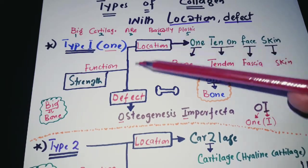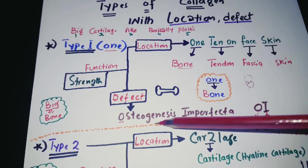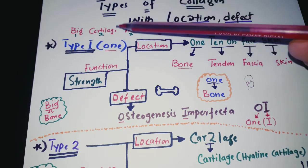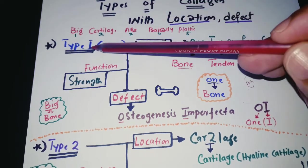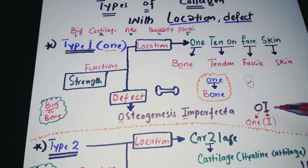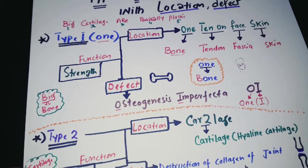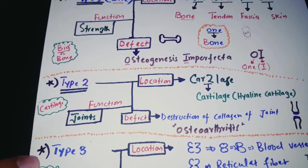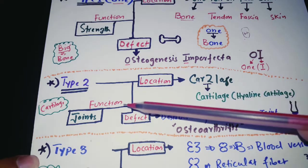The function of Type 1 collagen is to provide strength. The defect in it is called Osteogenesis Imperfecta. You can remember this because in the number one you can see the letter O for osteogenesis, and the numeral 1 resembles an I, giving you Osteogenesis Imperfecta.